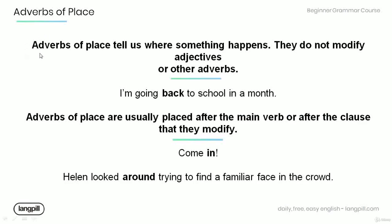Adverbs of place tell us where something happens. They do not modify adjectives or other adverbs. Have a look at the example below: 'I'm going back to school in a month.' The adverb of place 'back' modifies the verb 'going.' It tells us where we are going.